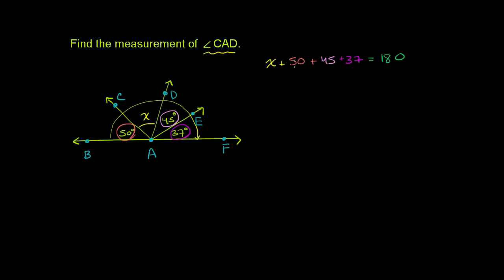And now let's see, 50 plus 45 is 95. 95 plus 30 is 125, plus 7 is 132. So all of that is 132.